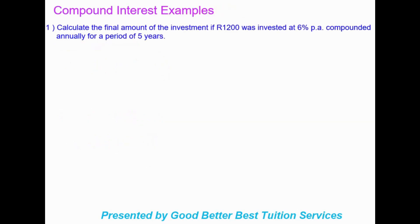Let's move into some compound interest examples to revise how we go about answering these questions. The first question says: calculate the final amount of the investment if R1200 was invested at 6% per annum, compounded annually, for a period of five years.